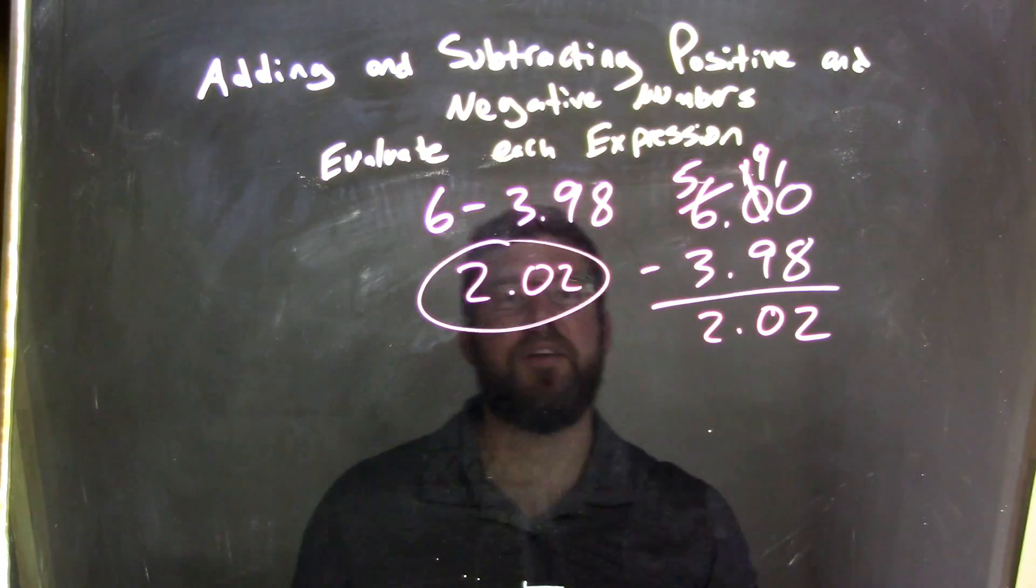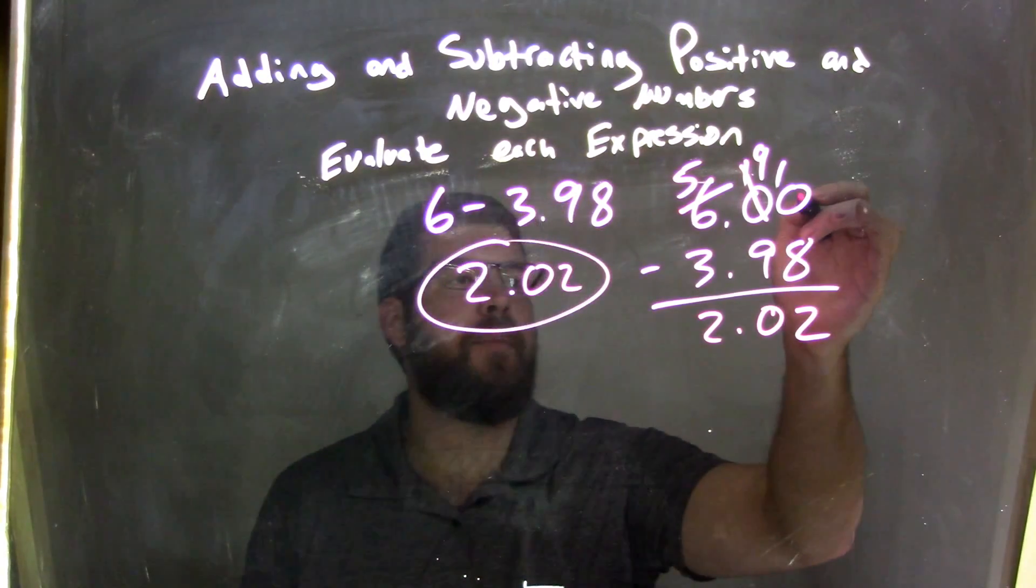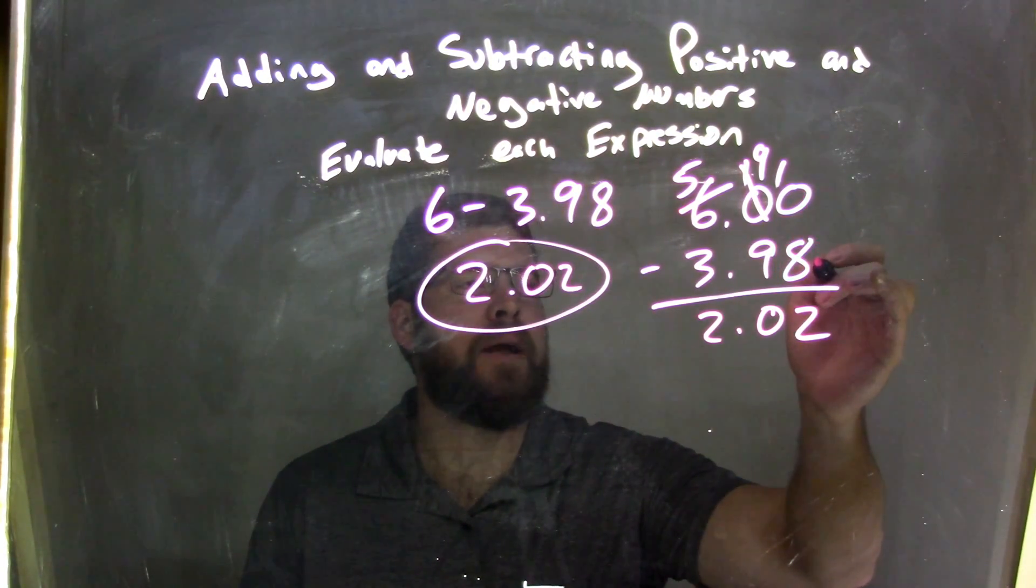Let's recap. We had 6 minus 3.98. 6 is larger, so we have it on top here.